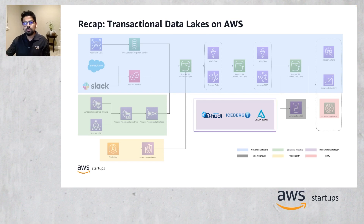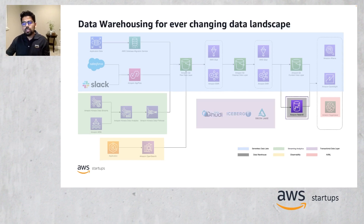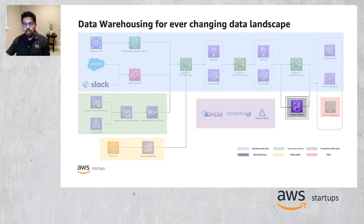In the previous video, we talked about transactional data lakes and how frameworks like Apache Hudi can bring ACID properties to structured and unstructured data lakes. So in this video, I'll talk about how data warehouse can help in the ever-changing data landscape and how Amazon Redshift plays a vital role as a highly optimized data warehouse delivering the best price performance at any scale. I will also cover how Amazon Redshift integrates well with other AWS services in a modern data architecture.